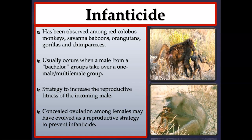Concealed ovulation among females may have evolved as a reproductive strategy to prevent infanticide. Essentially, if a female has concealed ovulation and it is not certain when she is ovulating, this confuses paternity. If that male is not certain whether the offspring could be his, he is less likely to commit infanticide.